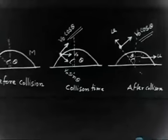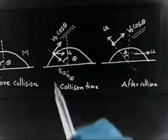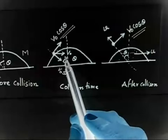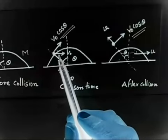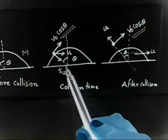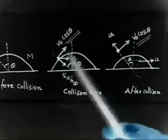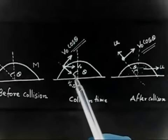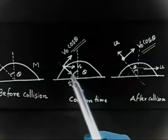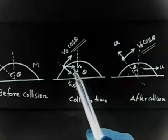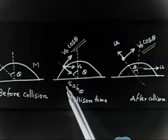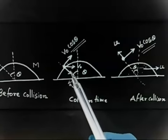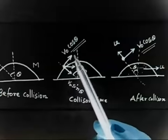At the time of collision, this mass is colliding and just before the collision it has velocity v naught. I can break this velocity into two components: one in the radial direction and one in the tangential direction. If this angle is theta, then this angle is 90 minus theta, so the component in this direction is v naught sin theta, and the component in the other direction is v naught cos theta.